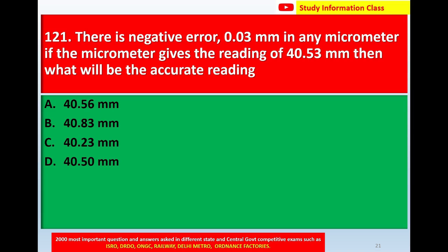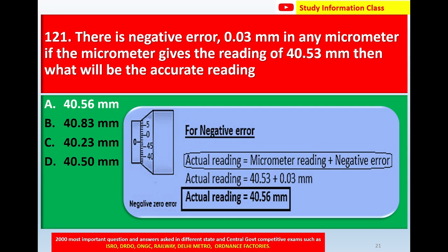Question number 121: There is a negative error of 0.03 mm in a micrometer. If the micrometer gives a reading of 40.53 mm, what will be the accurate reading? Option A: 40.56 mm, Option B: 40.83 mm, Option C: 40.23 mm, Option D: 40.50 mm. The correct answer is 40.56 mm.